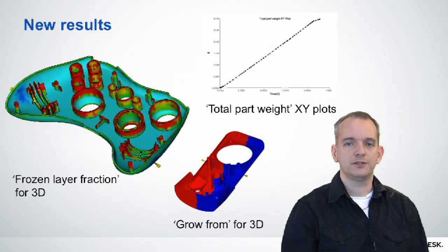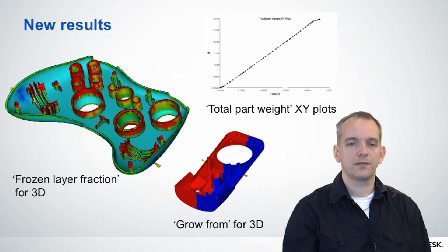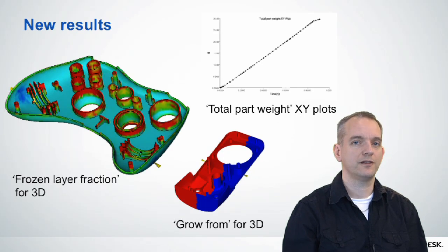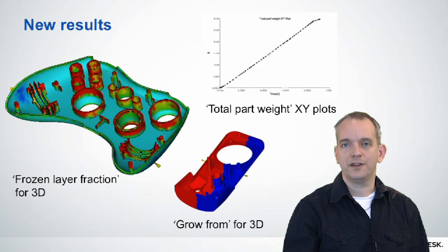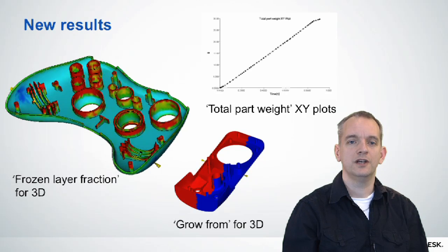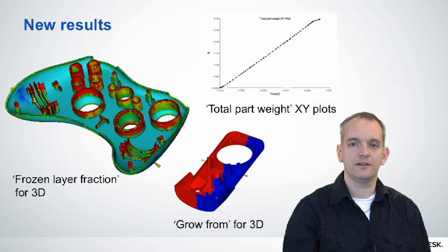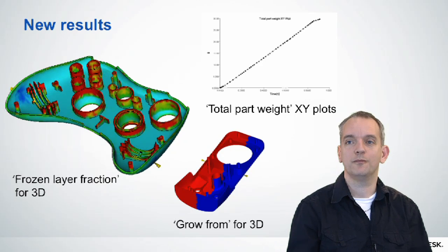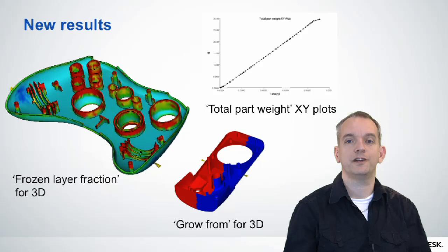We added some new results as well for 3D. Frozen layer fraction — very similar to what we have in midplane and dual domain — allows you to quickly identify areas that are freezing quicker than other areas, so you can find areas that need to be addressed very quickly. We also added Growth From to these 3D results. This was already available in dual domain and midplane, and it's now added to 3D plots — it allows you to actually see where polymer goes from one specific injection location to where it ends up.